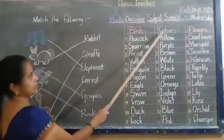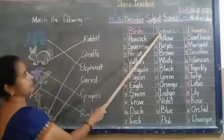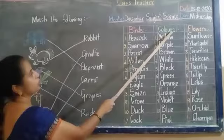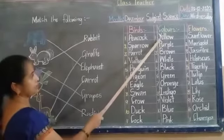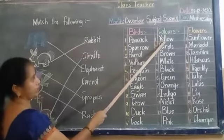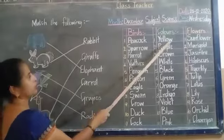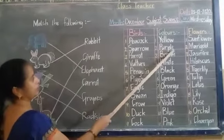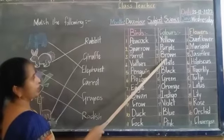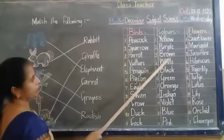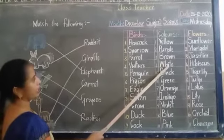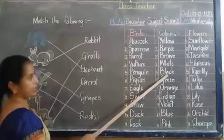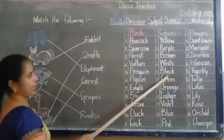Now let us learn the spellings of colors. C-O-L-O-U-R-S. Colors. White. Yellow. Purple. Brown. B-R-O-W-N. Brown. White. W-H-I-T-E. White. Black. B-L-A-C-K. Black.